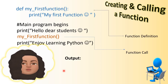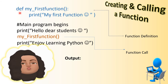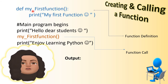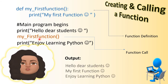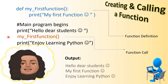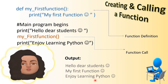Let's see the output and how program execution works. Program execution begins from the first line - when the compiler sees 'def' as the first line, the function header is noted but the body is not executed yet. It comes to the main program - the comment line is skipped, so execution begins from the print statement. It first prints 'hello dear students', then at the function call it goes to the function definition, executes the body printing 'my first function', and returns to print 'enjoy learning python'.